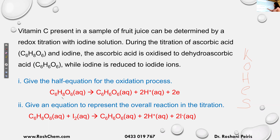This side has eight hydrogens, the other side has six hydrogens. Therefore, you want two H plus on this side. Now the left side has no charge — zero. The right side is two plus, because two into one plus is two plus. So you want two minus, that's why I put two electrons. Now it's balanced.